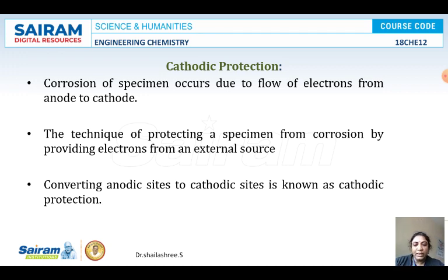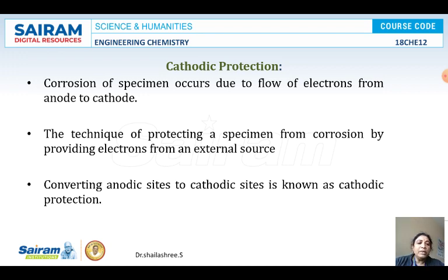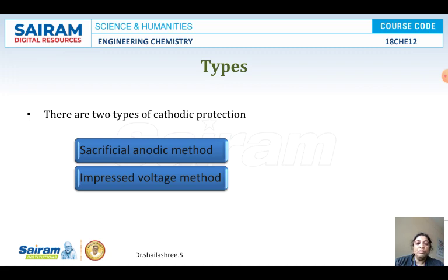In one method, we connect the base metal to a metal which is highly reactive than the base metal. For example, to protect iron, iron should be connected with another metal present above it in the electrochemical series. The highly reactive metal will undergo anodic corrosion and will protect the base metal iron. Under cathodic protection there are two types: the sacrificial anode method and the impressed voltage method.